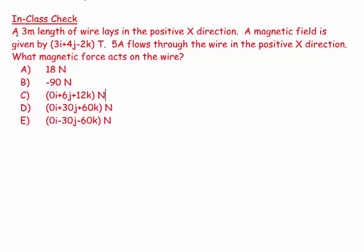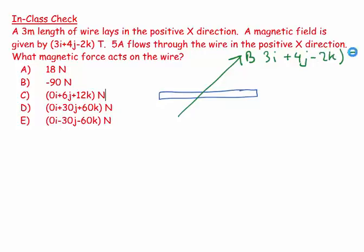Welcome. This question says a 3 meter length of wire lays in the positive x direction, so let's draw that. It says a magnetic field is given by, so the magnetic field is here and it's given by 3i plus 4j minus 2k Tesla.